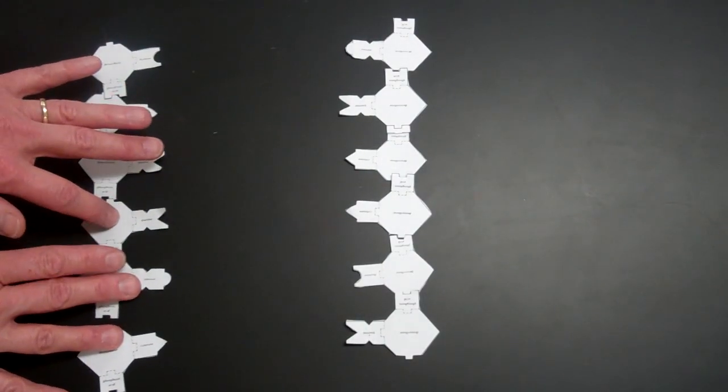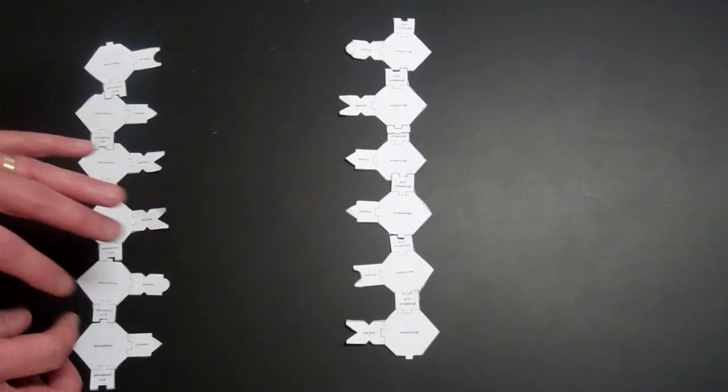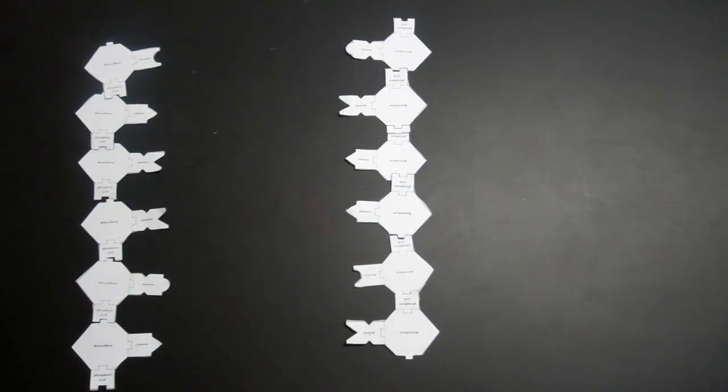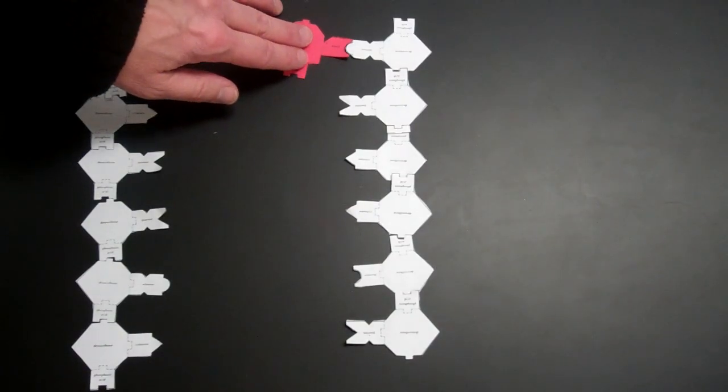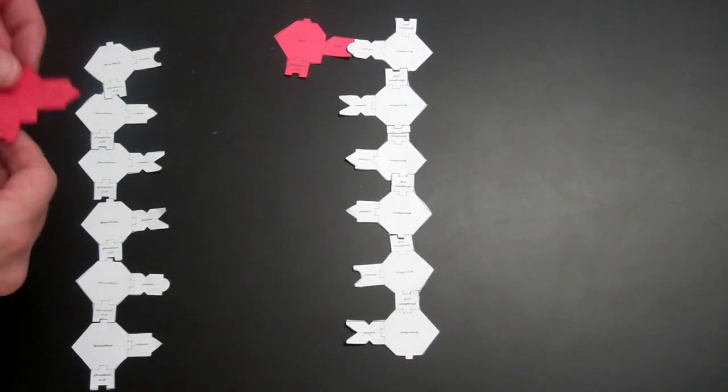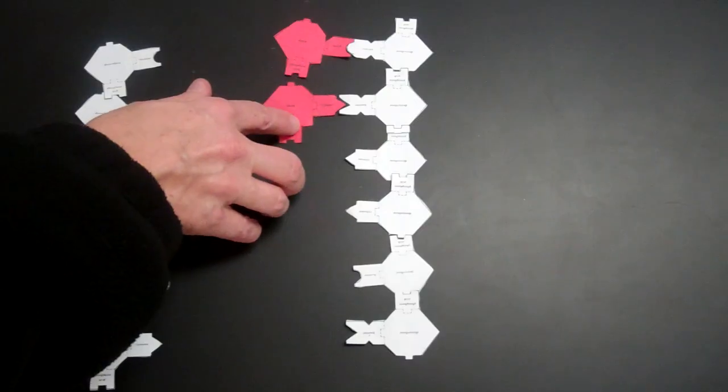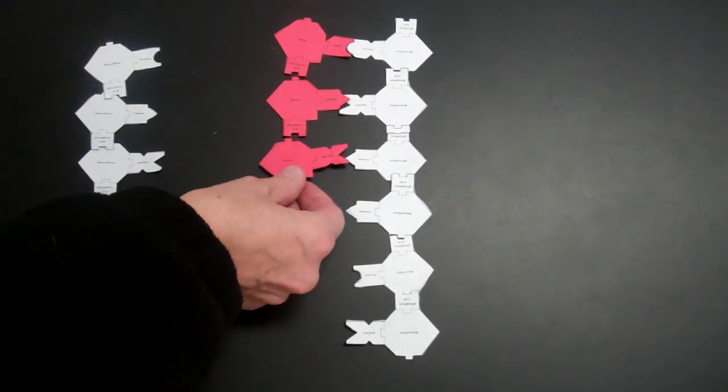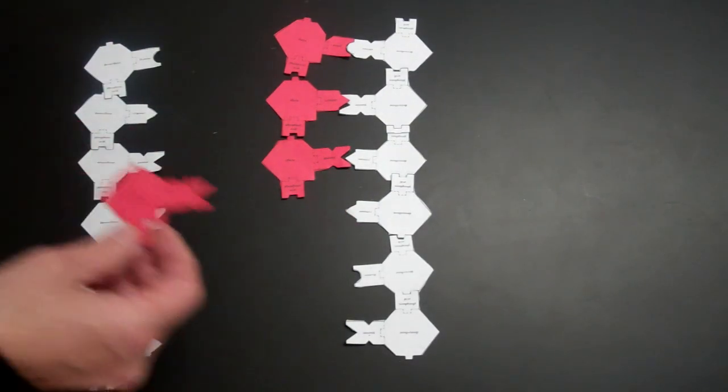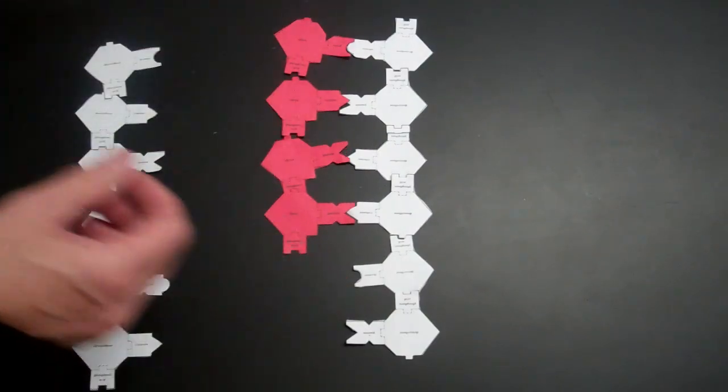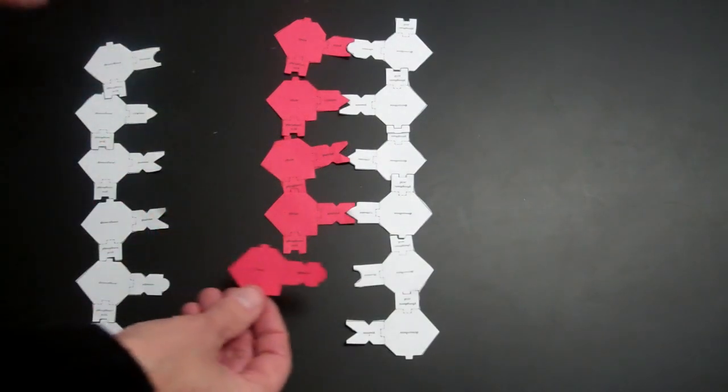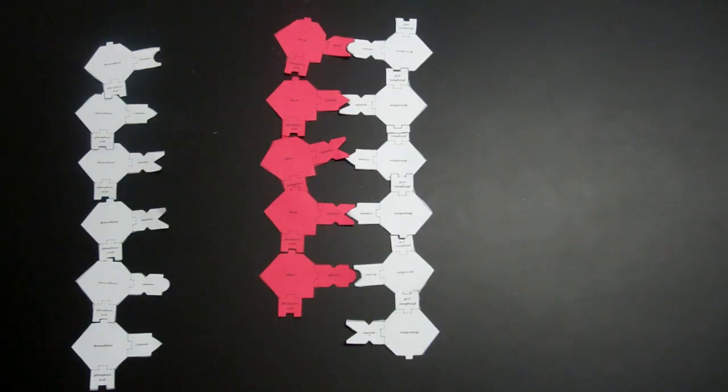The weak hydrogen bonds between the bases allow that to happen. Next, messenger RNA is going to come in and bond along one side of the DNA molecule. In our lab, it tells us to use the right-hand side of the DNA as its template. So the messenger RNA is building itself.